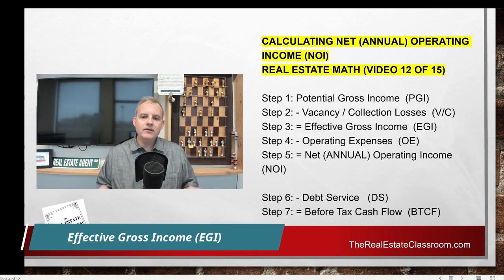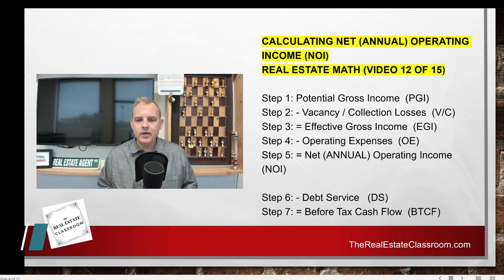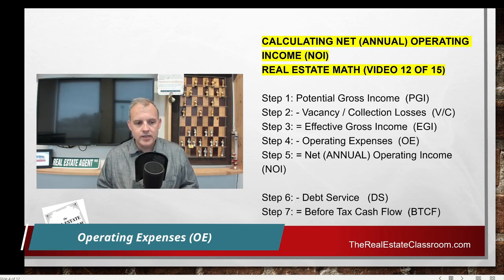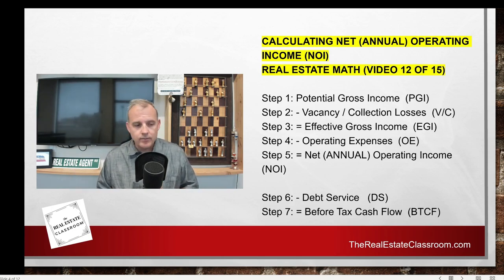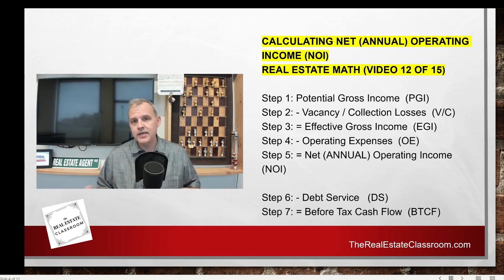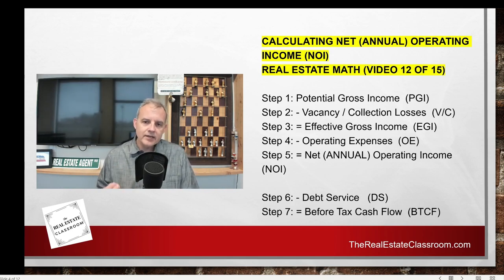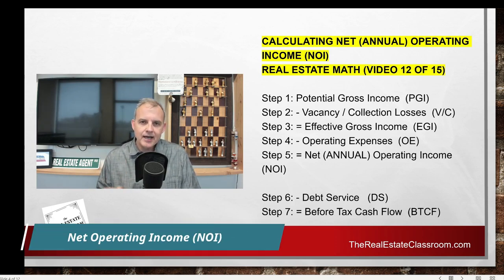Then we take the effective gross income and subtract our operating expenses. Operating expenses are simply those expenses we incur to run our business — things like renting our office, salaries for employees, insurance, benefits, utilities, property taxes, and vehicles. We take the effective gross income, subtract the operating expenses, and that gives us our net operating income, or NOI.